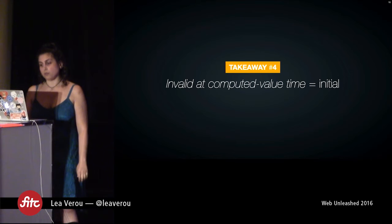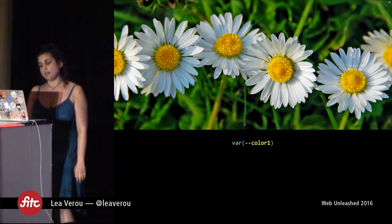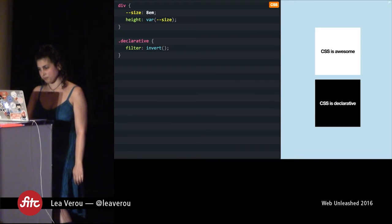The fourth takeaway is that 'invalid at computed value time' always computes to initial — exactly the same as if you had specified the 'initial' keyword explicitly. Another thing to keep in mind about fallbacks is that you can daisy-chain them: the fallback for color-one could be color-two, whose fallback is color-three, whose fallback is red, which could be useful in some cases.